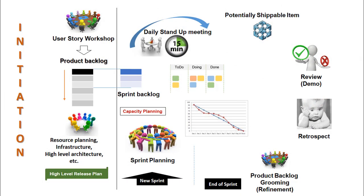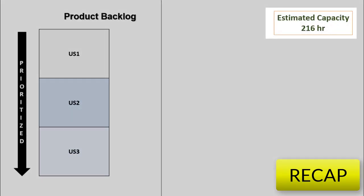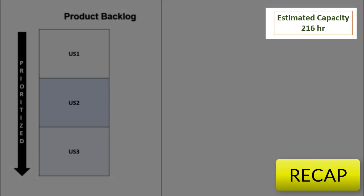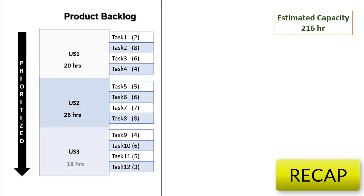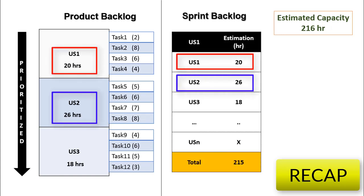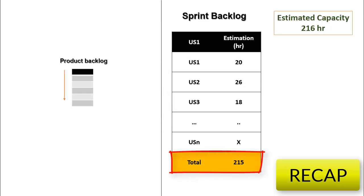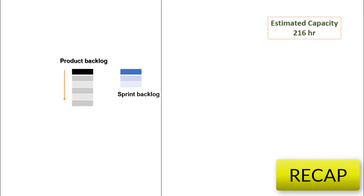In the last video we discussed about the scrum process overview and then about the sprint planning ceremony in detail. We learned about how sprint capacity is estimated. In a sample calculation we estimated 216 hours as sprint capacity, and we will be using the same for the discussion in this video. We discuss about the sprint backlog formation based on the available capacity, adding stories that would make the sprint backlog items less than or equal to the capacity hours. Let us assume that the sprint backlog thus created is of 215 hours.